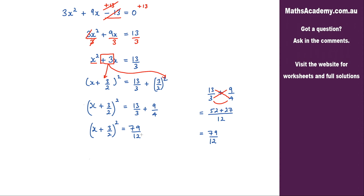The next thing to eliminate is the squared on the left hand side. And to do that, I need to take the square root. So if I take the square root on the left, I must take the square root on the right. So I must remember to put a plus and a minus in here, because if I take the square root of this number I will get a positive and a negative answer.